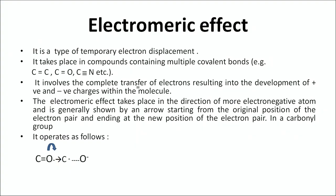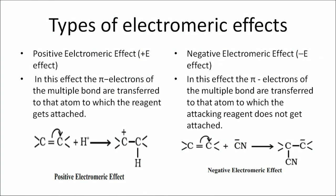The electromeric effect is a type of temporary electronic effect. It takes place in compounds containing multiple bonds like C=O, C=C, etc. In the molecule C=O, oxygen being electronegative will pull the electrons towards itself, becoming negatively charged, and carbon becomes positively charged. There are two types: positive electromeric effect and negative electromeric effect. In positive electromeric effect, one carbon attracts the pi electrons and becomes negatively charged; if you add a positively charged species or electrophile, it will attack the negative carbon. In negative electromeric effect, the pi electrons of the multiple bond are transferred to the atom to which the attacking reagent does not get attached.